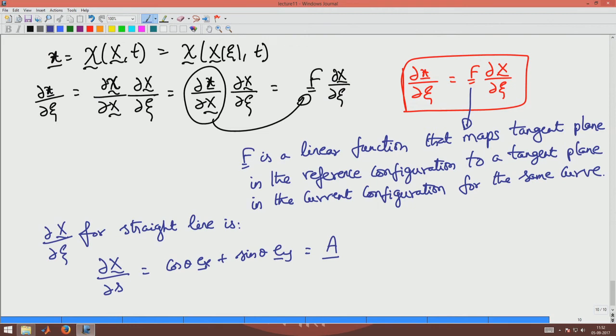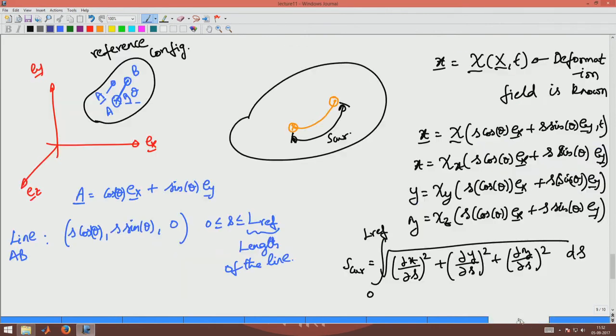So now going back, this is nothing but the magnitude of ∂x/∂X. This entire thing under the square root is the magnitude of ∂x/∂X integrated over ds.